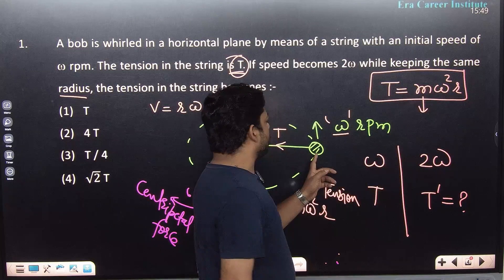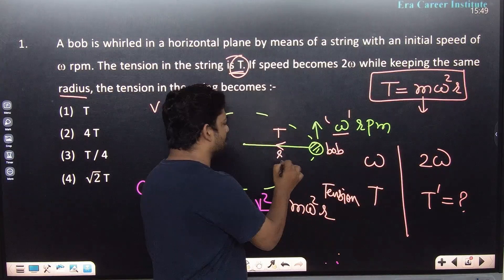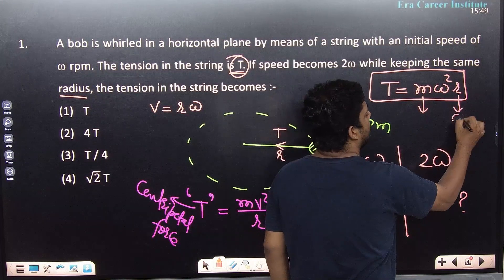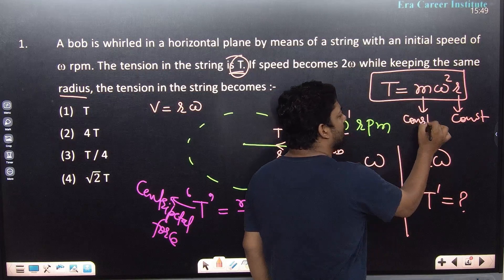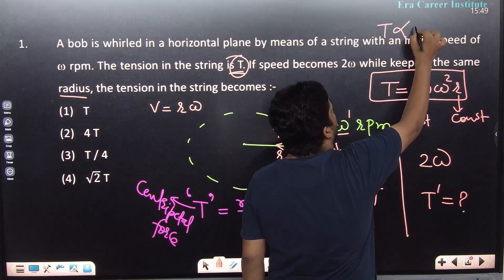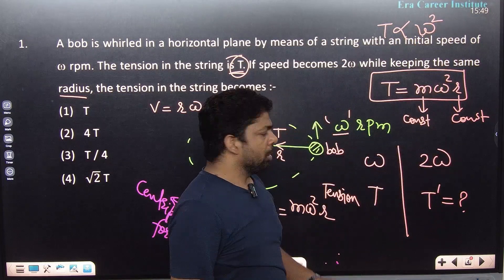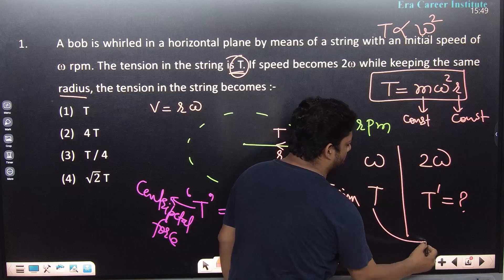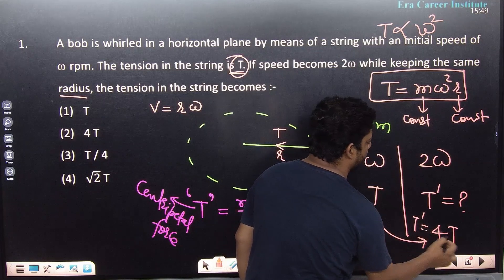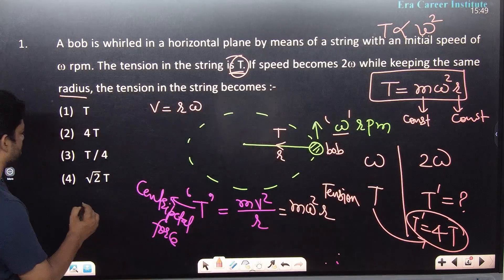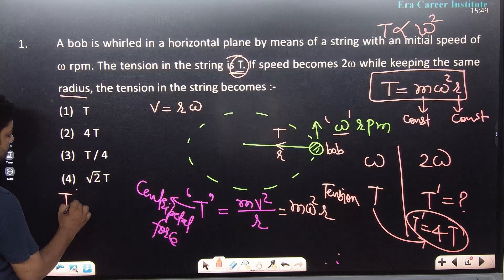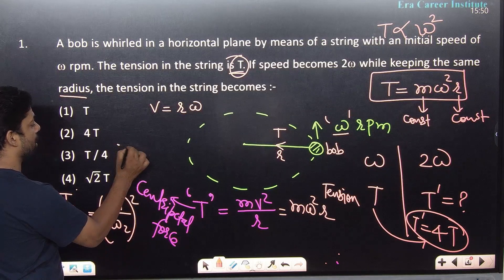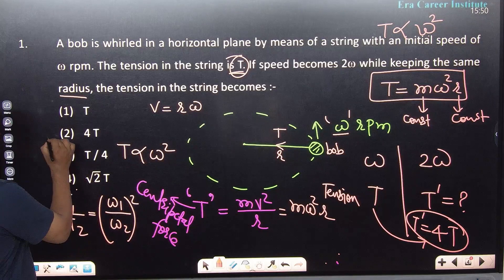Here m is the mass of the bob, r is the circular path radius, and ω is angular speed. Since r and m are constant, T is proportional to ω². If you double omega and square it, the tension becomes four times. So T₁/T₂ = (ω₁/ω₂)². Your answer will be four times the original tension.